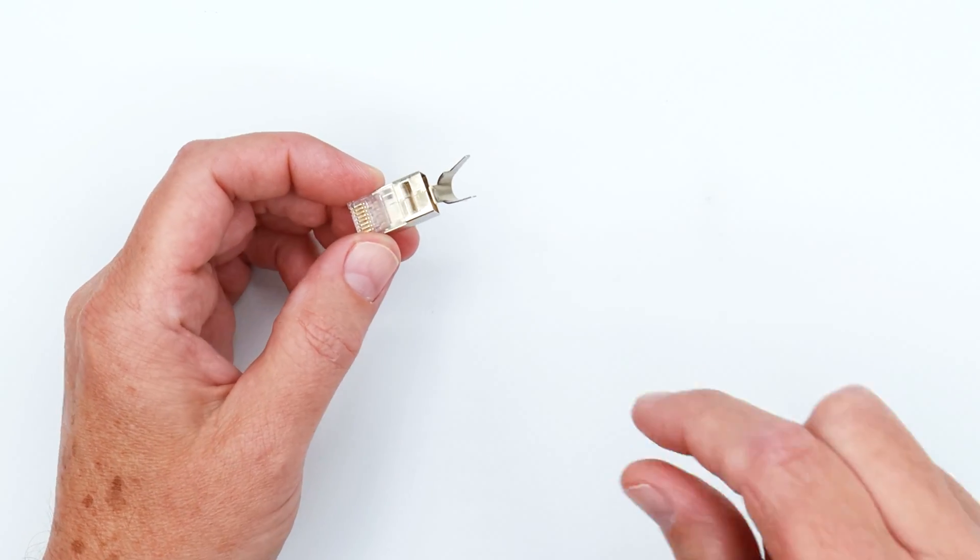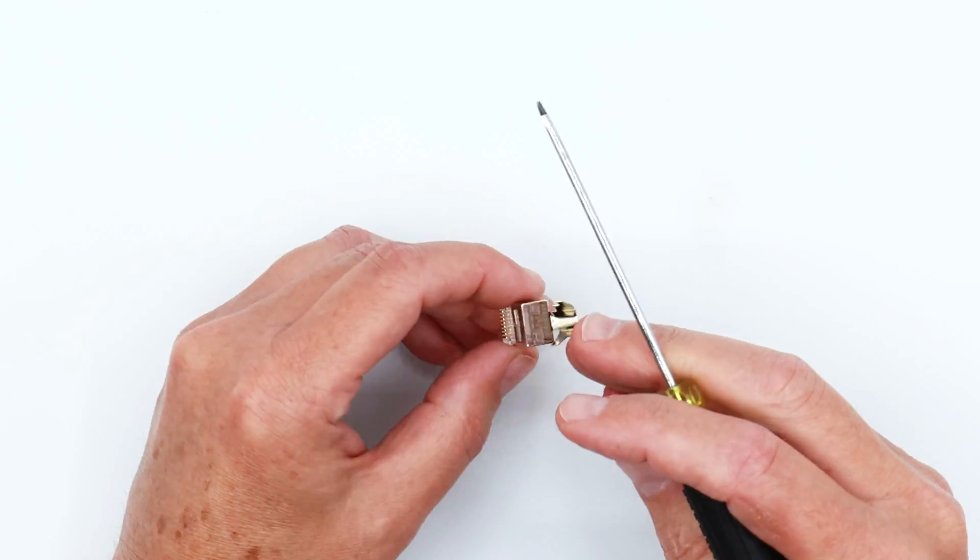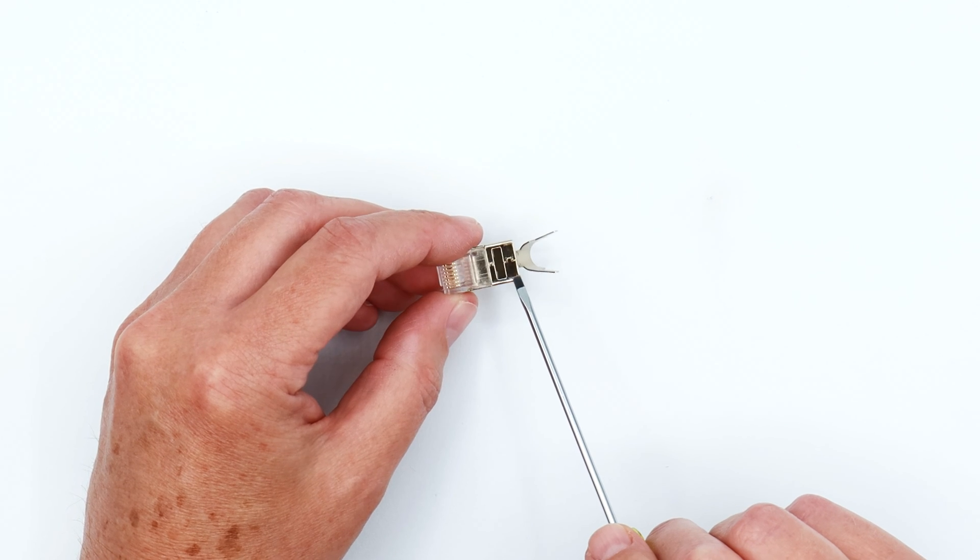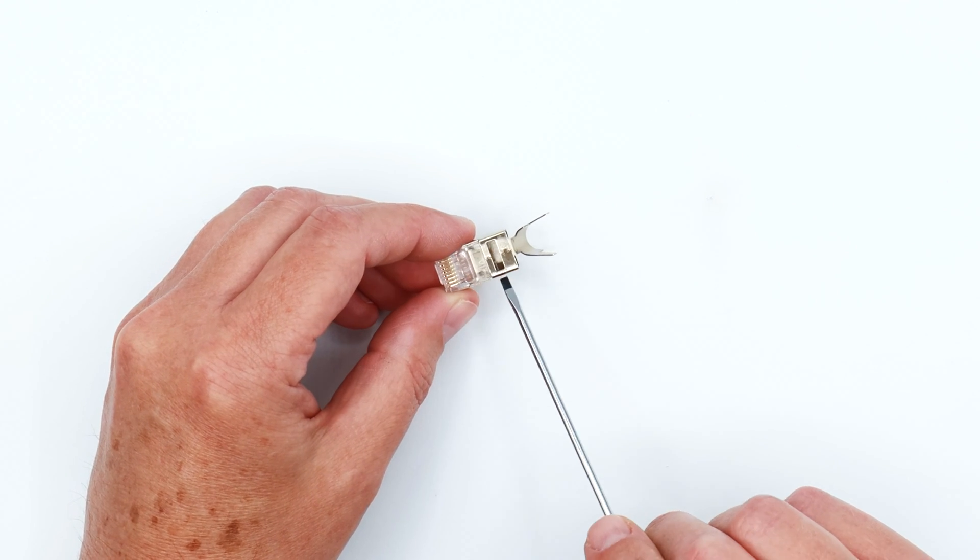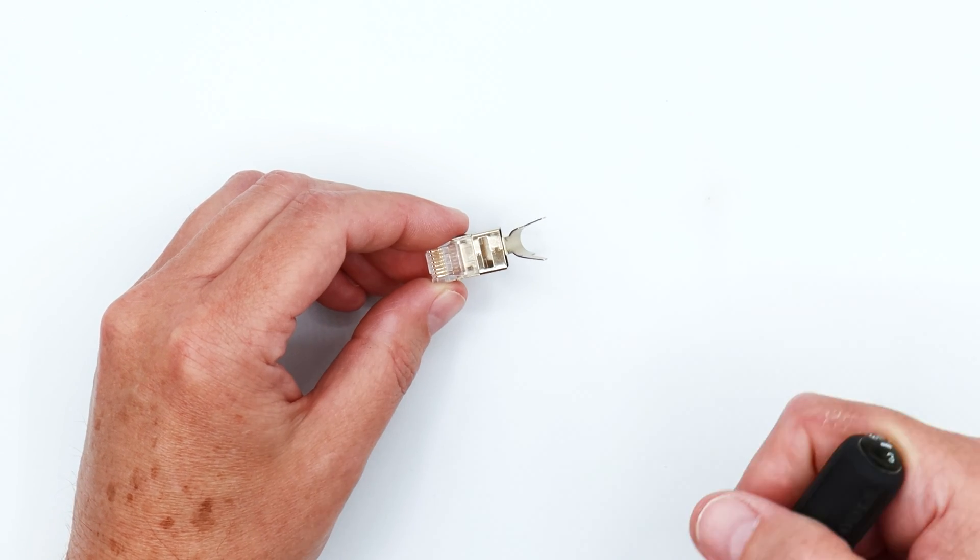So when you go to put one plug this way and one plug this way, if they have boots on them, you're going to have a conflict. So we recommend at the switch end to just use factory pre-terminated patch cords. Don't try to use these guys. You should be using a patch panel to patch cords anyway.